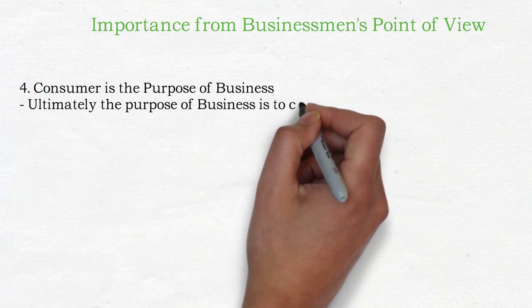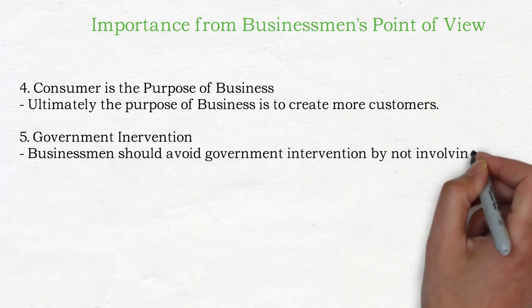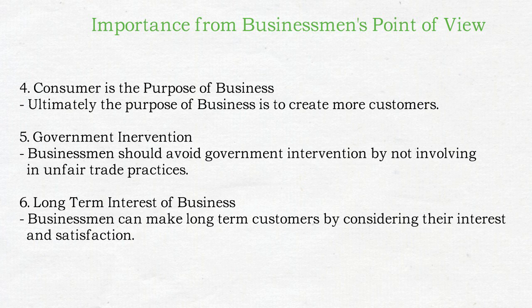Number four: consumer is the purpose of business — ultimately goods produce aur sale consumer ke liye hi hoti hai, toh consumer hi business ka purpose hota hai. Number five: government intervention — agar aap nahi chahte ki government aapke business mein interfere kare, toh pehle se hi ethical hona padega aur unfair trade practices mein involve nahi hona chahiye. Lastly, long term interest of business — agar business ko long time market mein rehna hai toh consumer ko satisfy rakhna, goodwill banana zaroori hai.